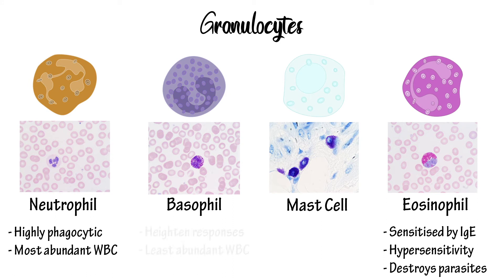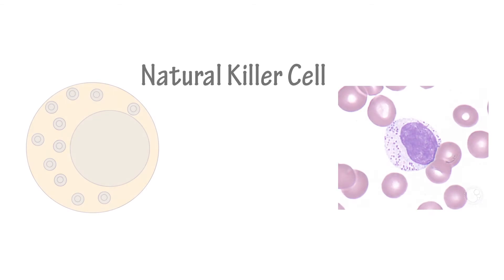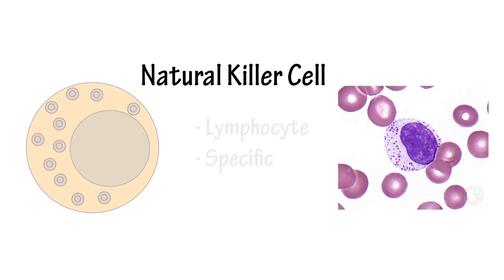Basophils act to heighten an immune response, and there are low levels of them in circulation. Mast cells are also heavily involved in hypersensitivity and inflammation. We also have natural killer cells, which are lymphocytes that specifically target and destroy virally infected cells.